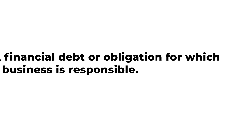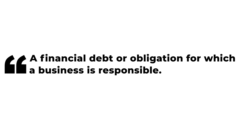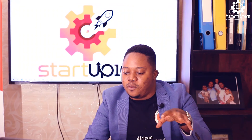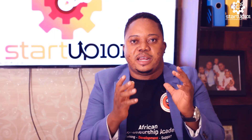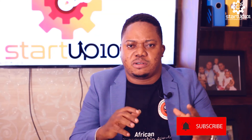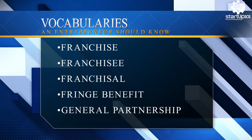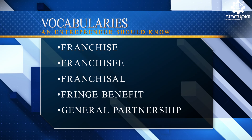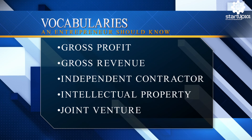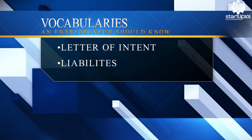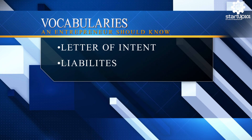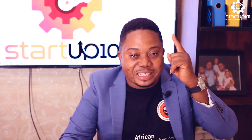One more: liabilities — a financial debt or obligation for which a business is responsible. It's been an amazing session. Let me do a little recap: today we covered franchise, franchisee, franchisor, fringe benefits, general partnership, gross profit, gross revenue, independent contractor, intellectual property, joint venture, letter of intent, and liabilities. It's been an awesome day — I hope you've learned something on Startup 101.